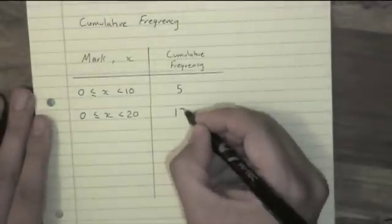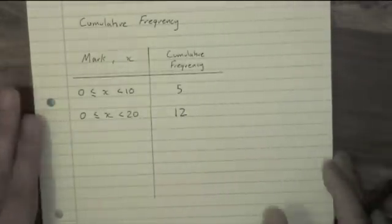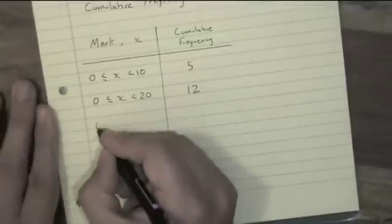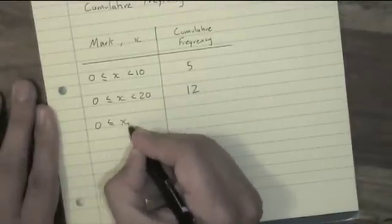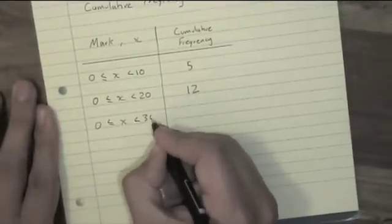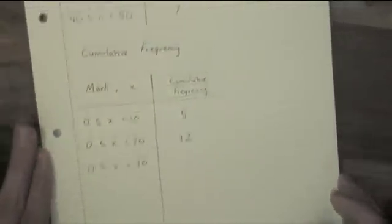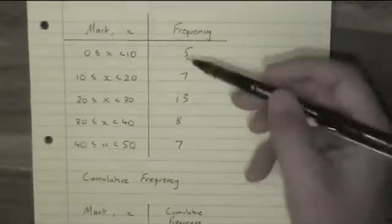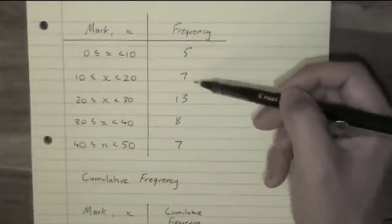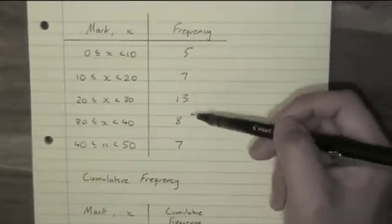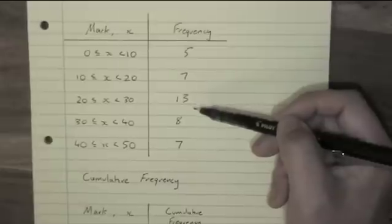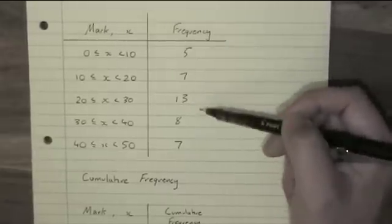Next is the number of people who scored between 0 and 30. So this is going to be all the people who got between 0 and 10, and all the people who got between 10 and 20, and all the people who got between 20 and 30. Add them all up, it's 25.